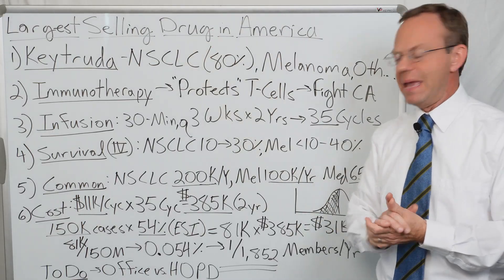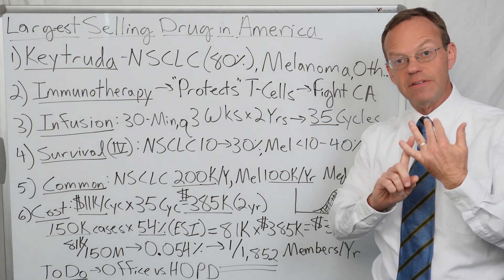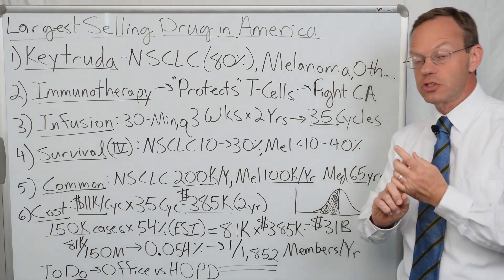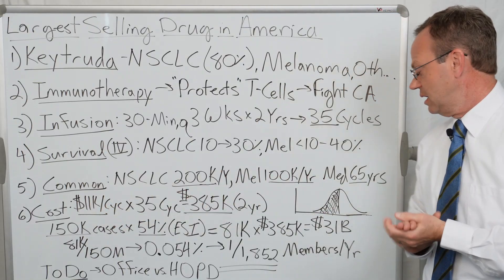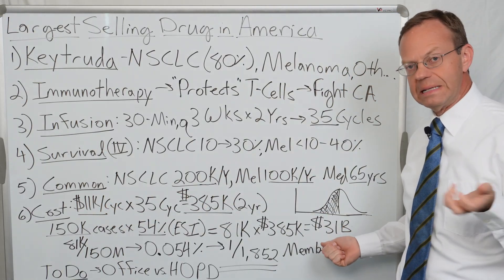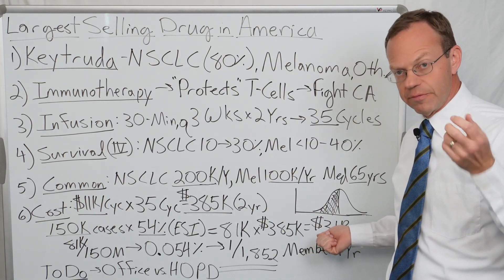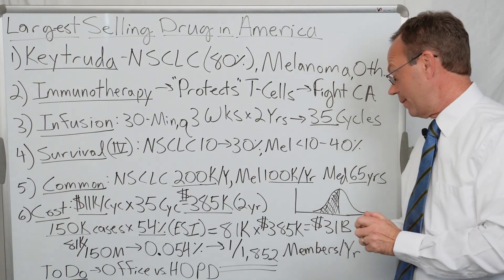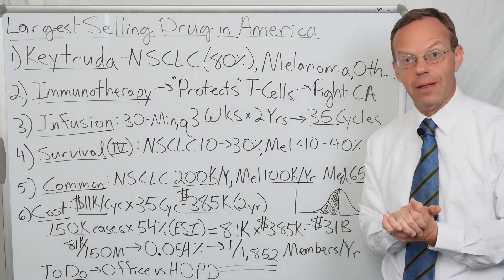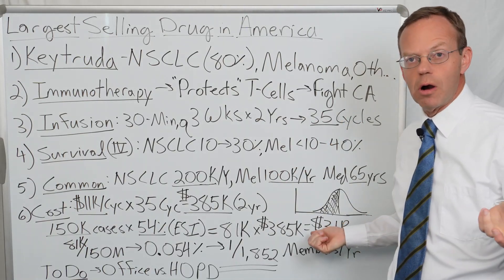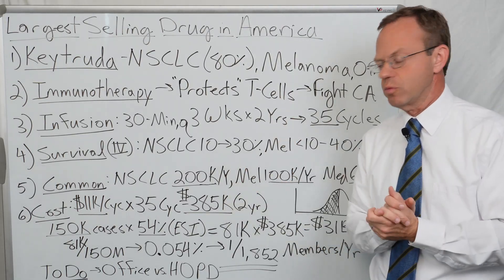Merck, the company that makes it, is not getting all of that $31 billion because a lot of it is the provider markup. If the provider is marking it up two or three times, potentially the pharmaceutical company is getting about half of the $31 billion and the provider is getting about half. For Merck, Keytruda was over half their revenue just from this one drug.